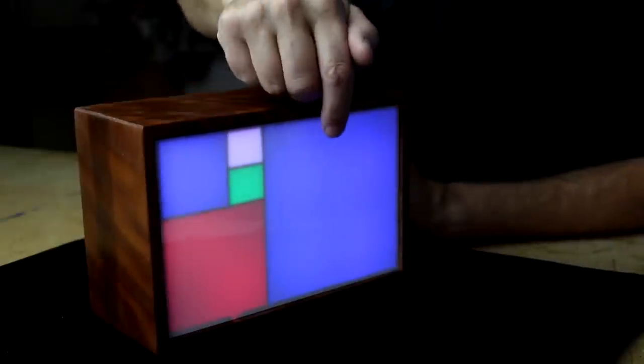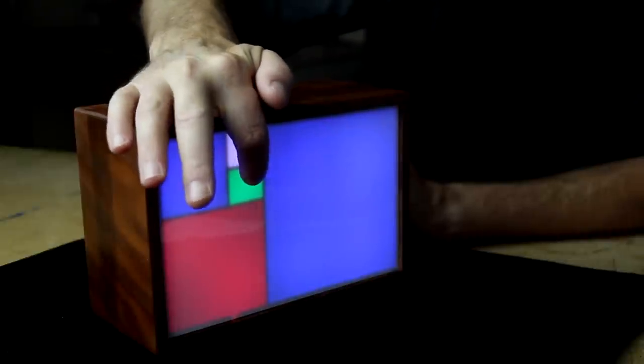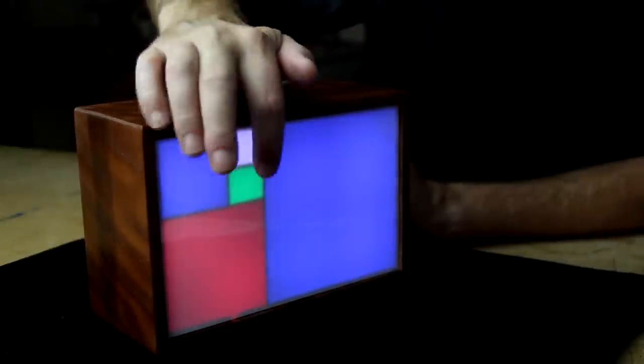Then to determine the minutes you add the green and blue and multiply by five. So we've got a blue value of five, a blue value of two, and a green value of one. So that's five, seven, eight. And you multiply that by five and you get forty. So the time is ten forty.